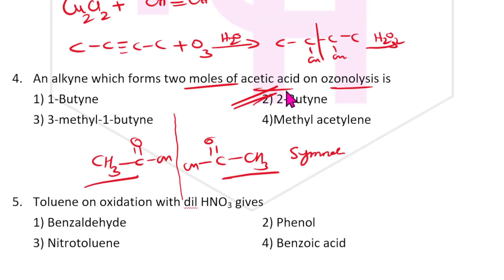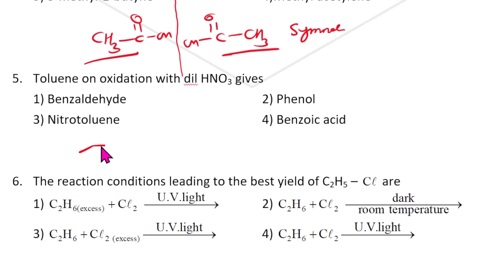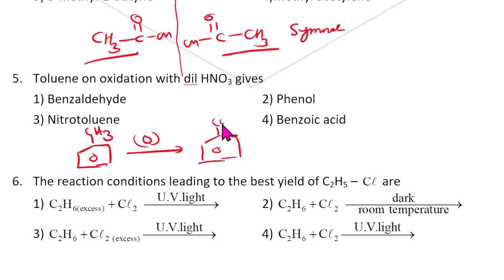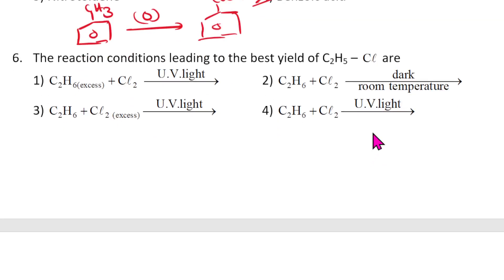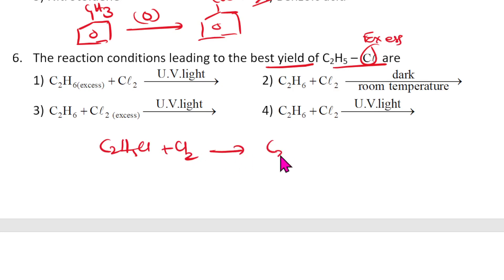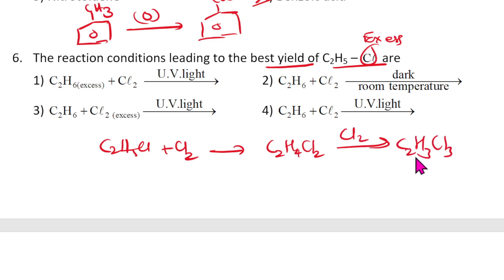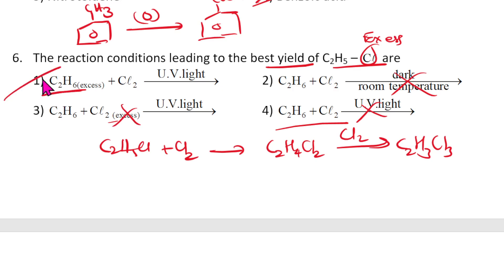Toluene oxidation with dilute HNO3 — the product formed is benzoic acid. The answer is fourth. For the best yield of C2H5Cl: if Cl2 is in excess, C2H5Cl further reacts with Cl2 to form C2H4Cl2, then C2H3Cl3. So with Cl2 excess and UV light, excess Cl2 won't give C2H5Cl. With C2H6 in excess, C2H5Cl will be the final product. Answer is first one.